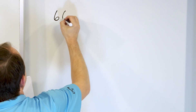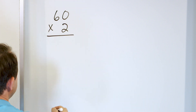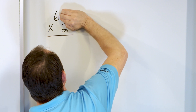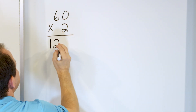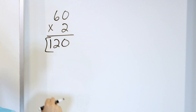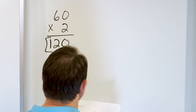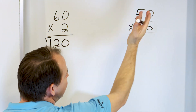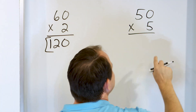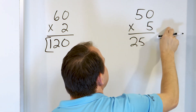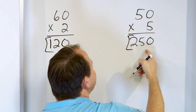What about 60 times 2? I'm multiplying by a multiple of 10, so let me cover that 0 up. What is 6 times 2? From my multiplication tables, it's 12. So those are the digits of the answer, and I'll stick that 0 onto the end to make it 120. So 60 times 2 is 120. What about 50 times 5? I don't have a multiplication table for this, but I can cover up the 0 and say, what's 5 times 5? That's 25. Add the 0 onto the end, so 50 times 5 is 250.